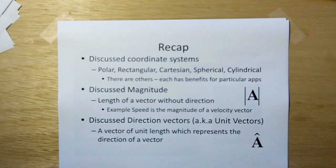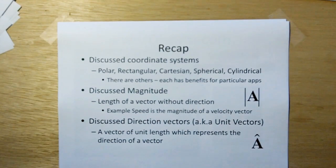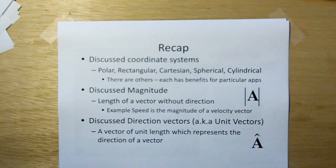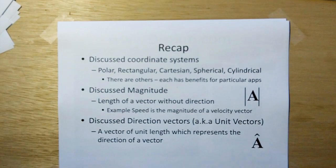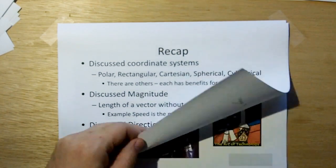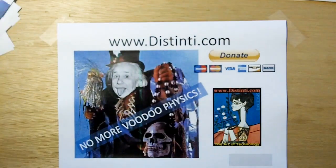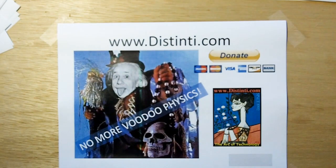Recap: we discussed the coordinate systems to give you a familiarization that there are many different ways to represent a vector. We went over polar, rectangular, Cartesian, spherical, and cylindrical — there are many others. Each has its benefits for any given particular application. We discussed magnitude, and we discussed direction vectors, which are also known as unit vectors. This completes the section on Engineering Vectors Coordinate Systems. Thank you.